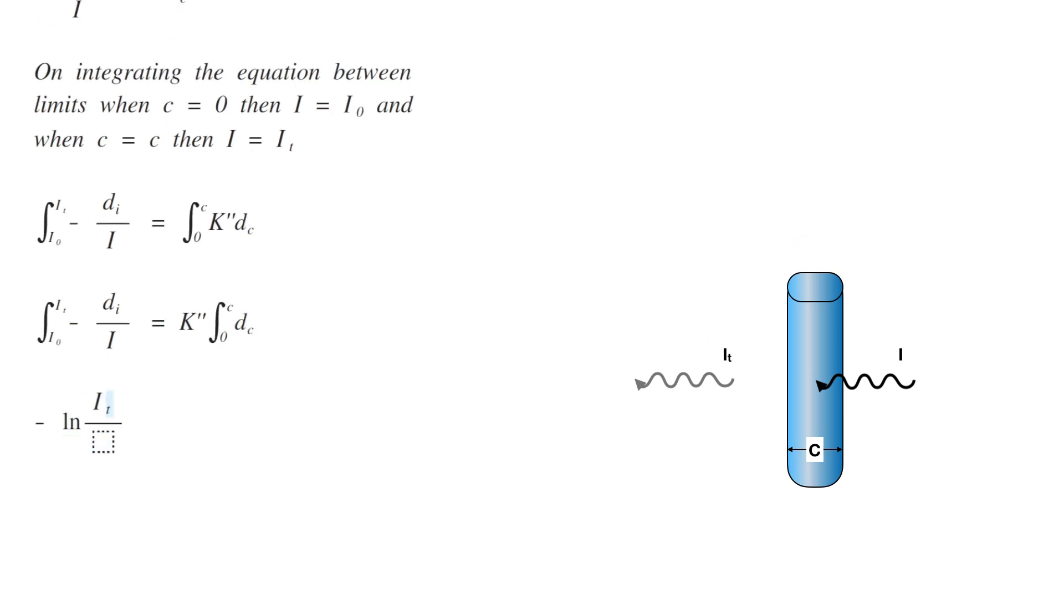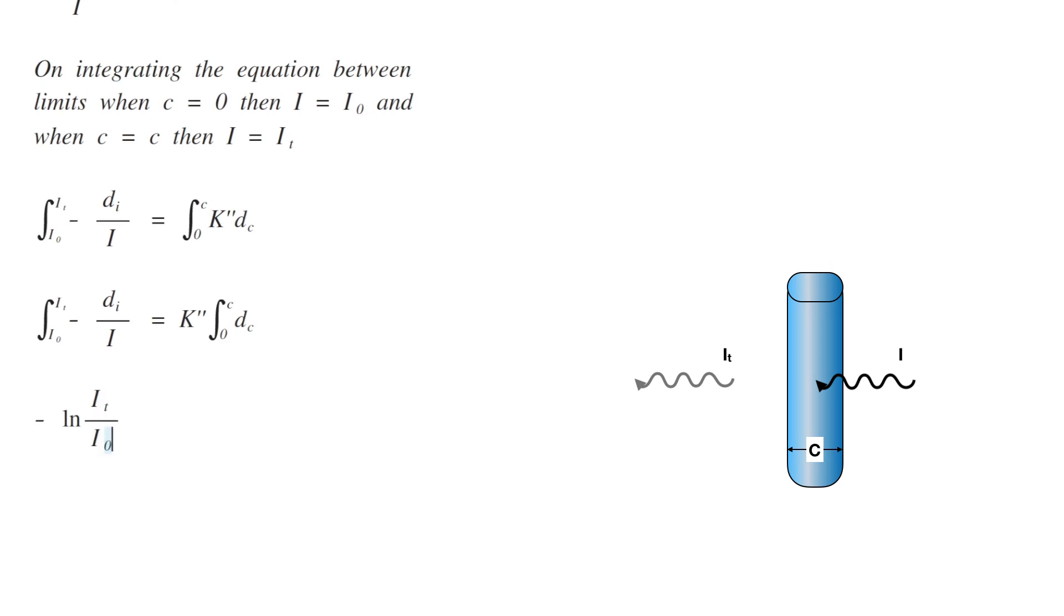Let's do the integration. So, minus ln of IT by I0 equals K double dash C.